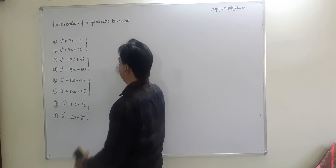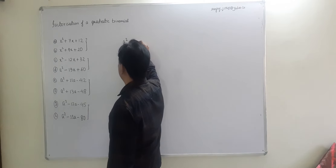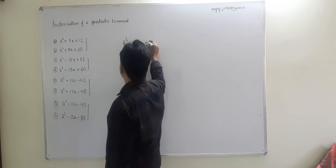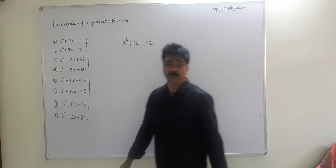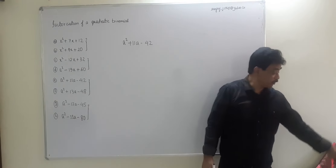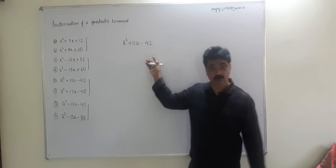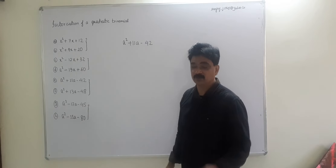Now when c is negative, the rule changes. The product of the two numbers should equal the constant term, but instead of the sum, you look for the difference. For example, a² + 11a - 42: the product should be 42 and the difference should be eleven.